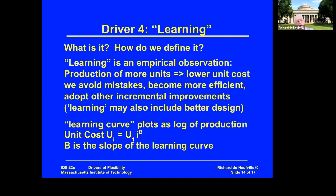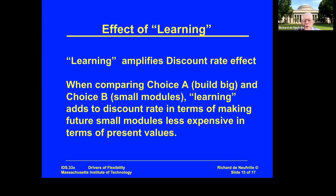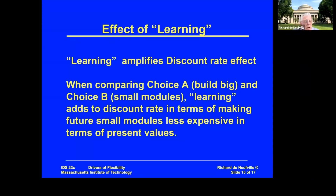This effect — which basically says if you build modules that are the same you can make it less expensive — adds to and increases the effect of the discount rate, insofar as it makes future investments in a series of modules cheaper. Learning is in quotes because it's not only learning; you may have technological improvements over time. You didn't have to have a piece as thick because you found you didn't need it, and so forth. As you make the same thing again and again, you can do it less expensively, and this can be quite important.